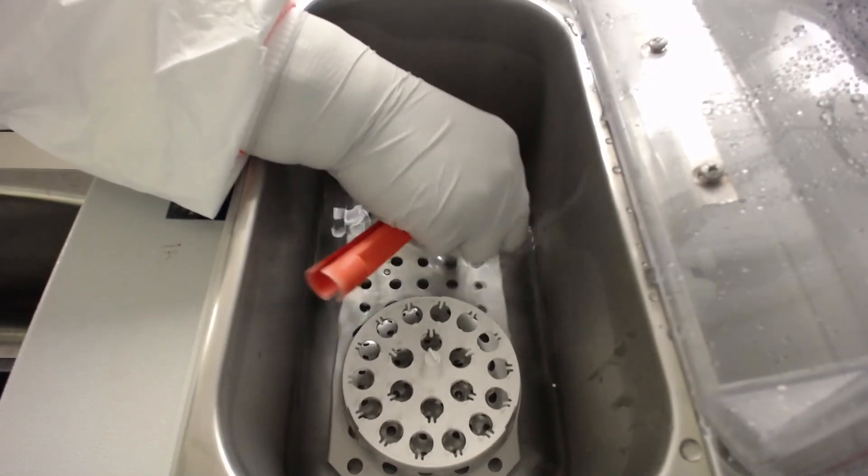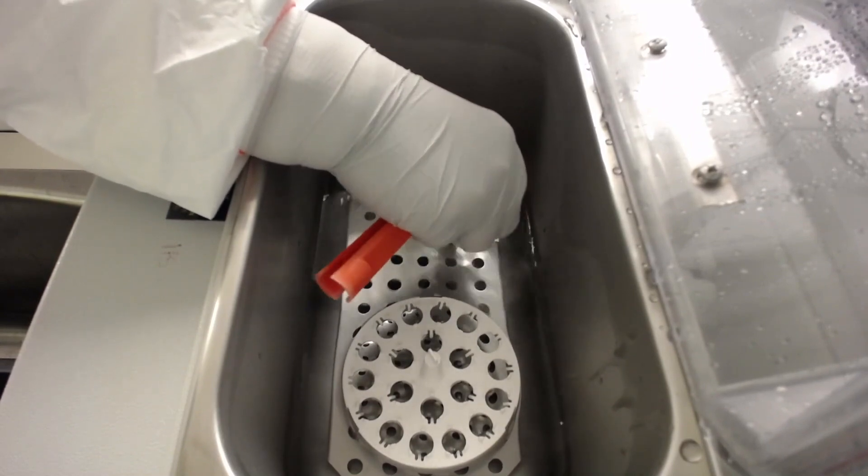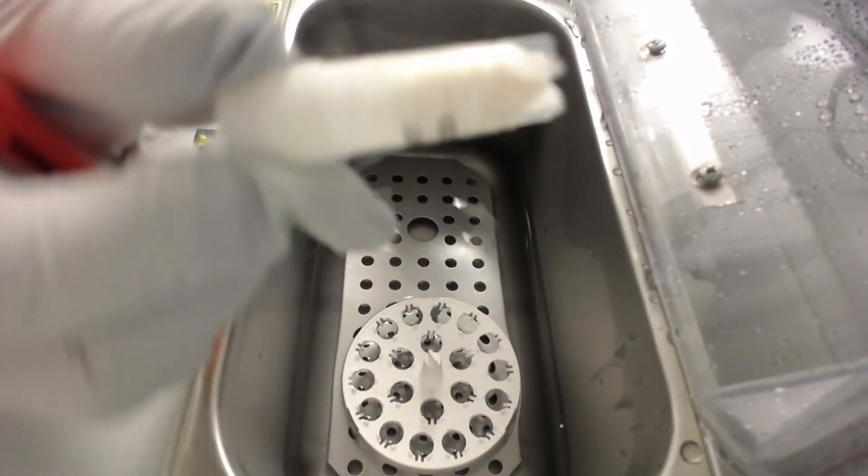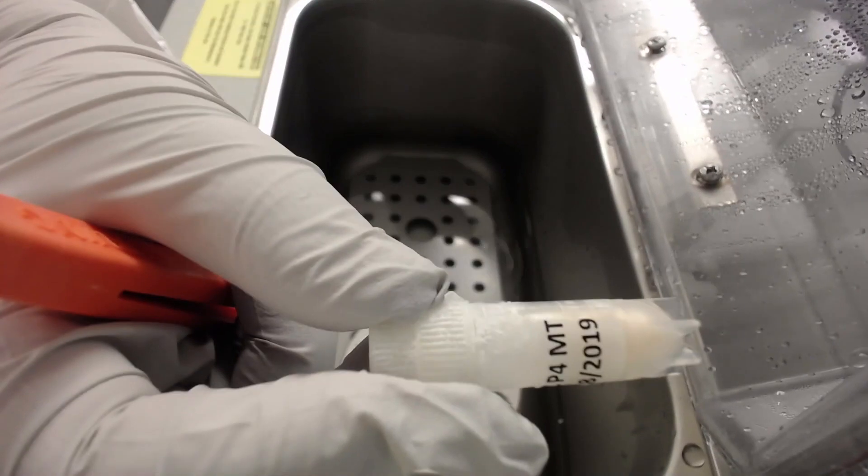Immerse the vial in the warm water and keep agitating it. The frozen cell pellet will thaw gradually. Check every 30 seconds to see how much ice is left. You might need to repeat this procedure a couple of times.